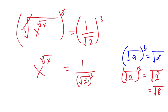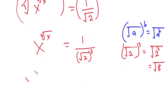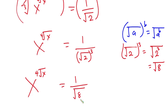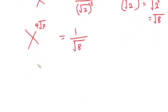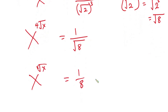In place of the square root of 2 to the power 3, I'm going to put the square root of 8. So this becomes x to the power of the fourth root of x is equal to 1 over the square root of 8, which is also the same as 1 over 8 to the power one half.